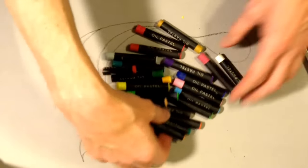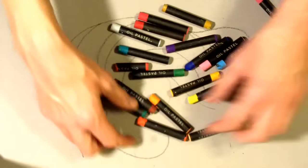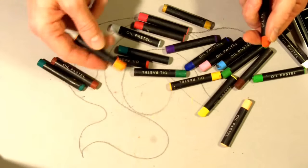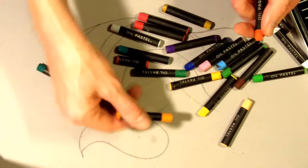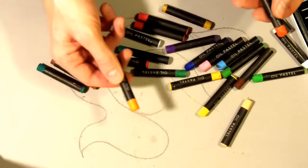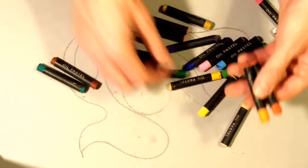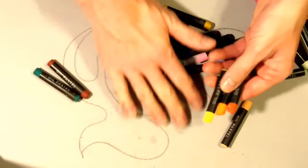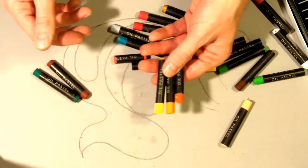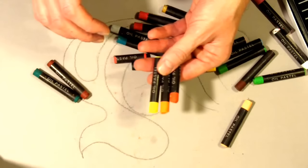Now most people when they color with oil pastels only color in one layer of a color and they wonder why it looks immature. The rule of threes says any area that you put color down you want to have at least three different shades.